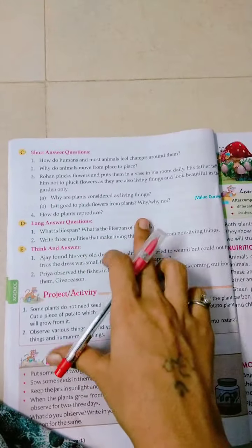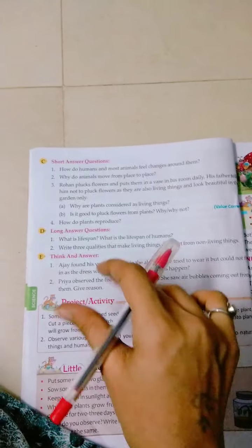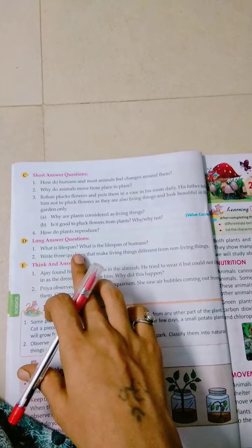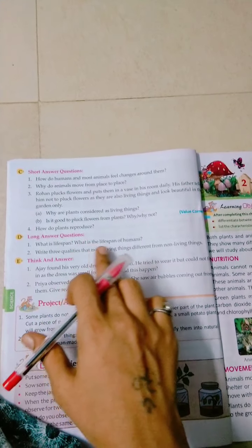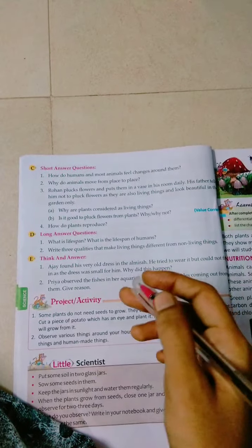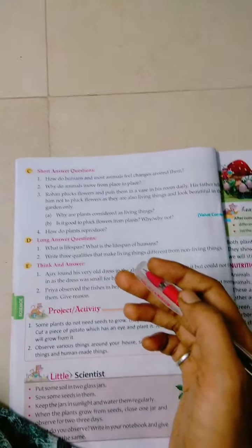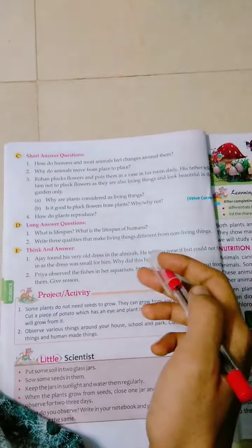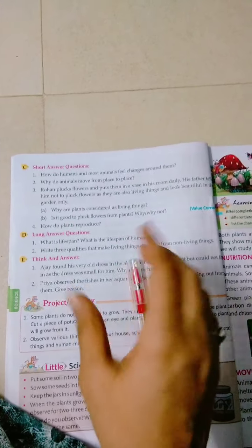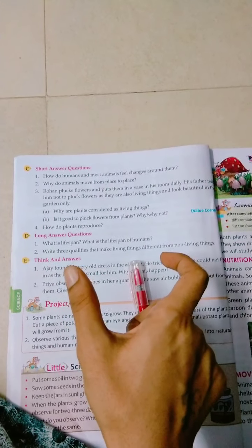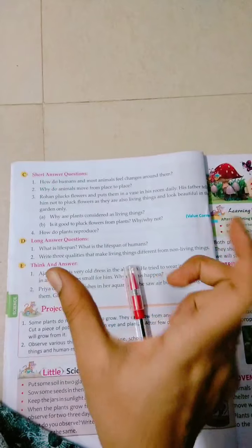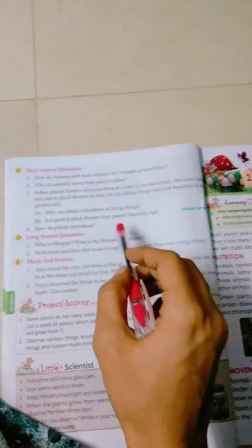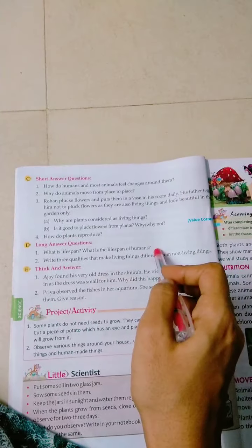Long answer questions. In long answer questions, you have to give the answer in two to three lines or four lines, according to the question. First question: What is life span? And what is the life span of humans? Every living thing has a definite period of life, then it dies. This is called life span. That is, every human has a definite period of life, and after that they die. This is called life span. Human beings have an average life span of 65 to 70 years.